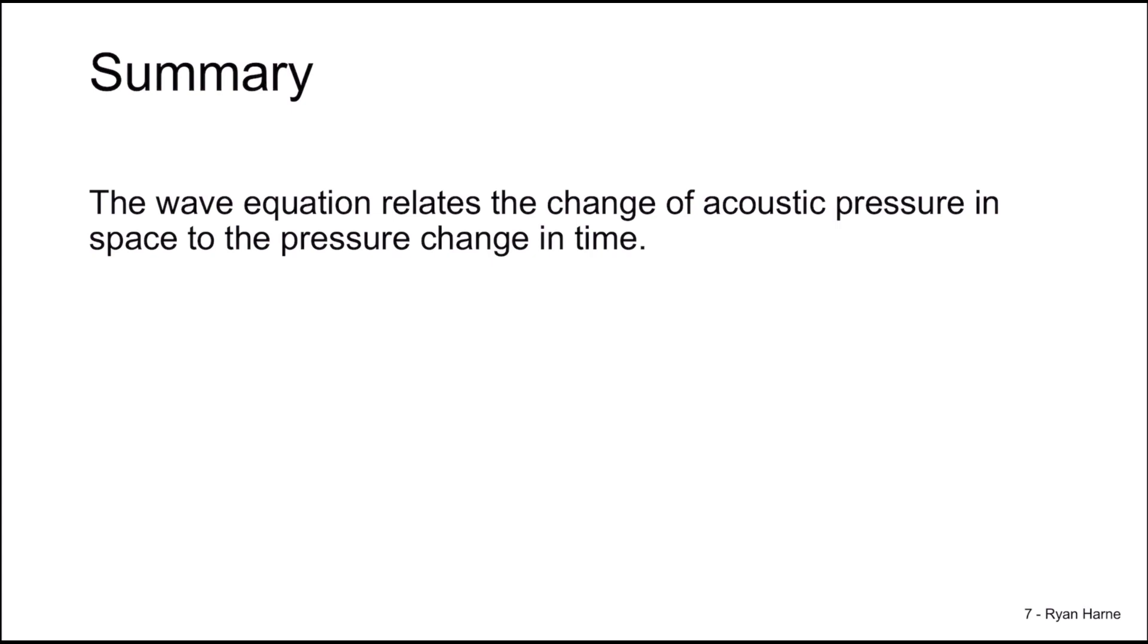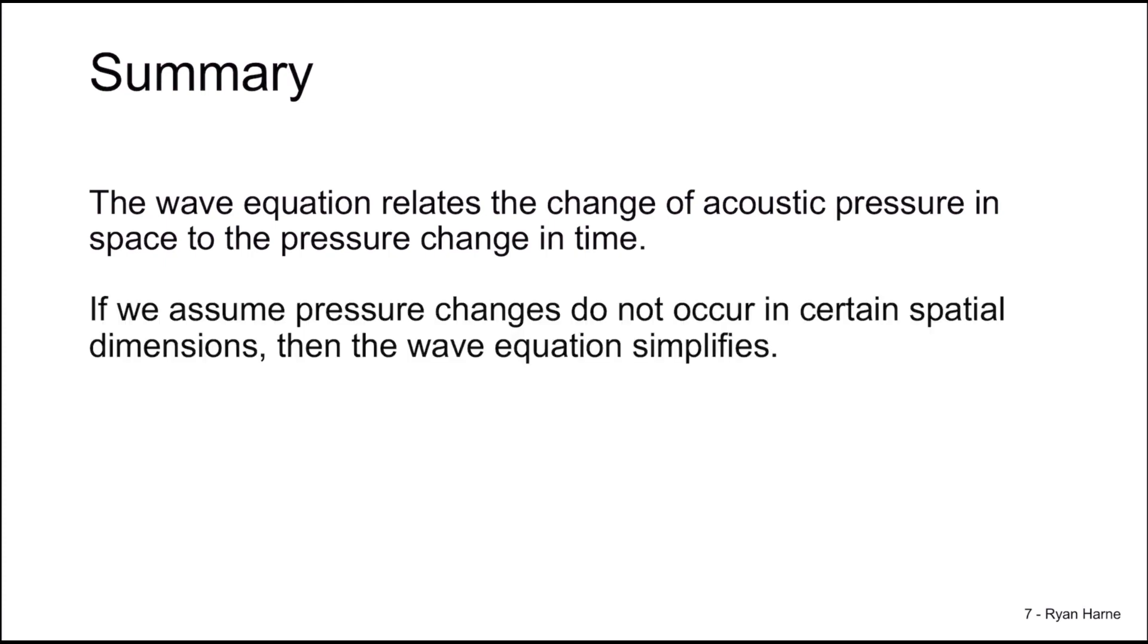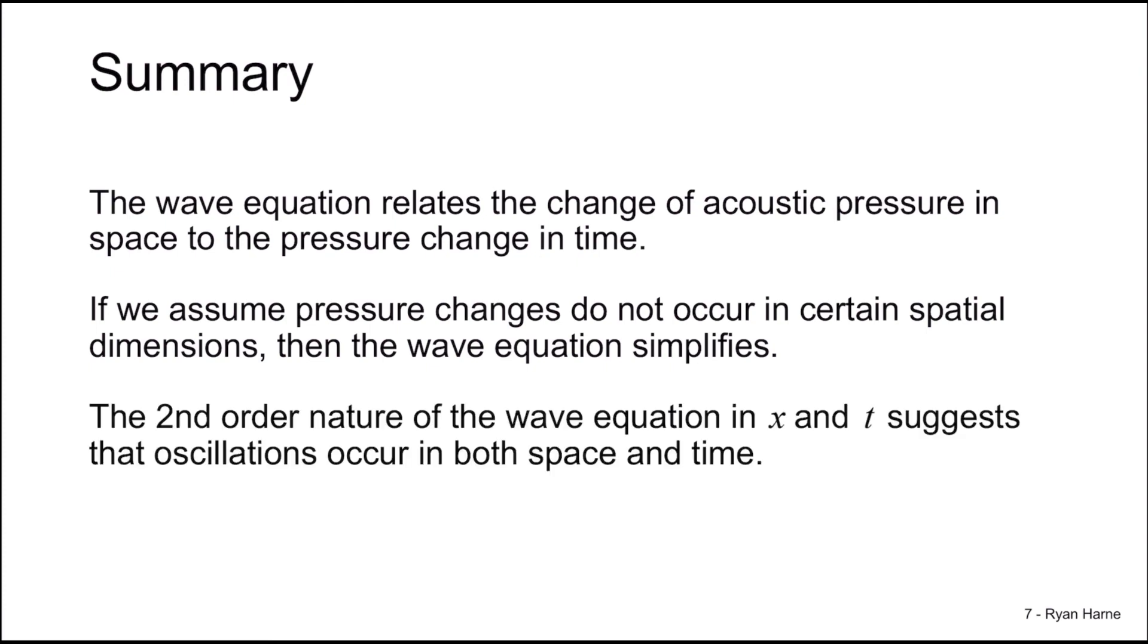So let's summarize what we have learned. We've learned that the wave equation relates the change of acoustic pressure in space to the pressure change in time. And if we assume that pressure changes do not occur in certain spatial dimensions, the wave equation simplifies significantly, especially for spherical coordinates. The second order nature of the wave equation in space and time, in other words, x and t, suggests that the oscillations are somehow related and they might occur both in space and time. And we'll explore this hypothesis in the next video.